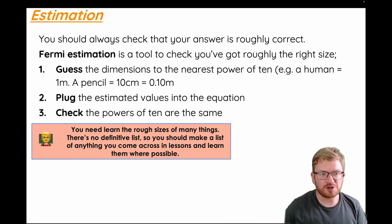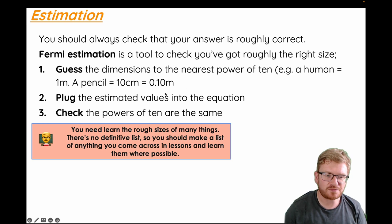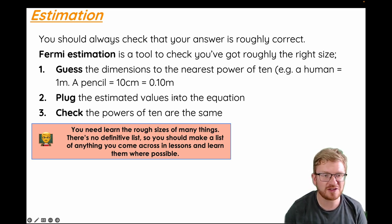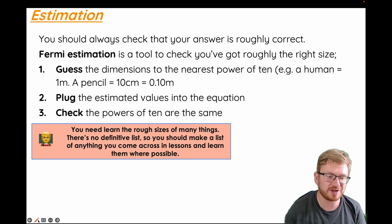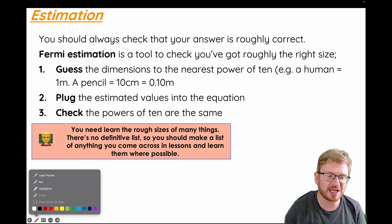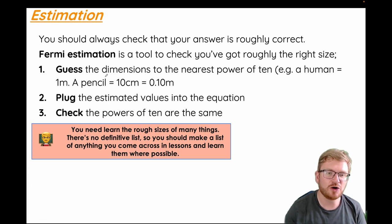The last thing to talk about is estimations. There is no definitive way of learning these, but you should, whenever you answer something in a physics exam, check that your answer is roughly correct. A good tool for that is called Fermi estimation. This isn't specified by the exam board, but I do find it a really handy technique to learn. The basic idea is to guess the dimensions of something to the nearest power of ten.